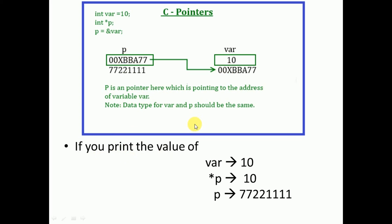Let us see how exactly you can access the values of the pointer and the variable to which the pointer is pointing. If you print the value of var, it will print 10. If you print the value of p, what is stored in p is the address of var, so that address is displayed. To access the actual value of the variable to which the pointer points, you have to use a separate operator called the dereferencing operator, which is denoted by star.